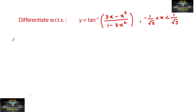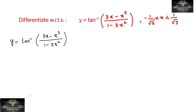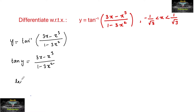Differentiate with respect to x: y is equal to tan inverse of (3x minus x cube) upon (1 minus 3x square), where x lies between minus 1 upon root 3 to plus 1 upon root 3. This implies tan y is equal to (3x minus x cube) upon (1 minus 3x square). Let us substitute x equal to tan theta, which implies theta is equal to tan inverse of x.